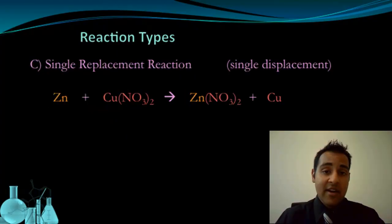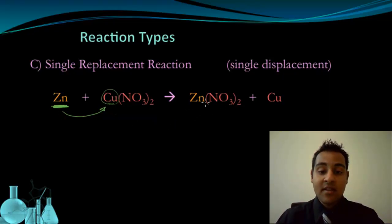The next type of reaction is called single replacement, or sometimes referred to as single displacement. In a single replacement reaction, a single element, so in this case zinc, a single element replaces another element in a compound. So we see the zinc replacing the copper, and so on the product side we get zinc with the nitrates plus copper left over. So it basically kicks out the copper. So in this example, zinc replaced the metal cation in this compound.